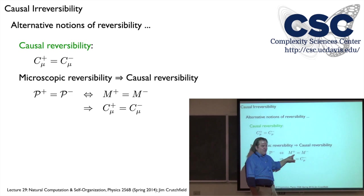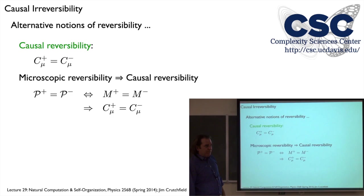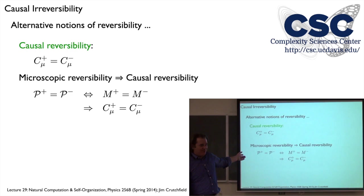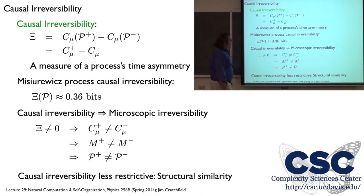The opposite isn't true. If the machines are the same they generate the same word distributions, but just having equal statistical complexities doesn't mean the machines are the same. We're emphasizing causal irreversibility — just the difference between the forward and reverse statistical complexities — as a nice crude measure of time asymmetry. In the Miserevich process on the logistic map, that was about a third of a bit different. One consequence: if you have a causally irreversible process (positive or negative delta, not zero), the complexities aren't the same, therefore the machines must be different, therefore the processes are different. So causal irreversibility implies microscopic irreversibility.